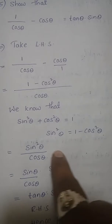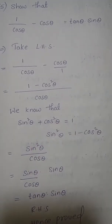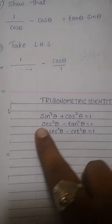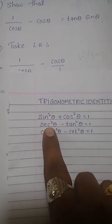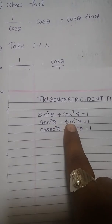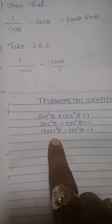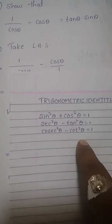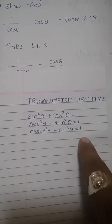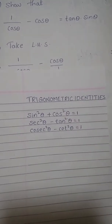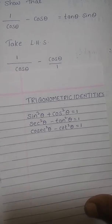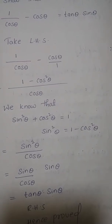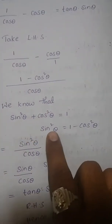From the trigonometric identities, we have three identities: sin²θ + cos²θ = 1; sec²θ − tan²θ = 1; cosec²θ − cot²θ = 1. We are using sin²θ + cos²θ = 1.